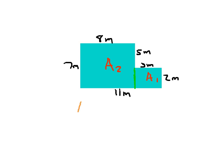If we look at A1 first, remember the formula for area is length times width. For this rectangle, there are only two sides that are completely labeled: 2 and 3, and they meet at a vertex. That completely describes that rectangle — it's a 3 by 2 rectangle. So we multiply 3 and 2 together to get 6 square meters.